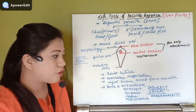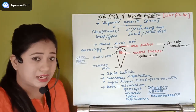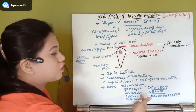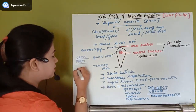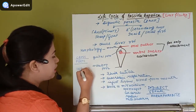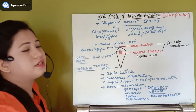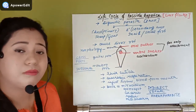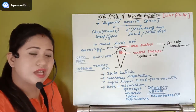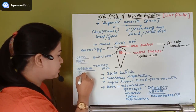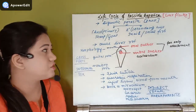In summary, the type of reproduction is sexual, this organism is hermaphrodite, and fertilization is internal — meaning the meeting of male and female gametes occurs inside the organism, not outside.